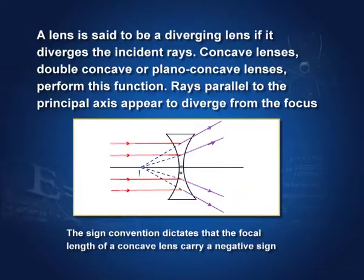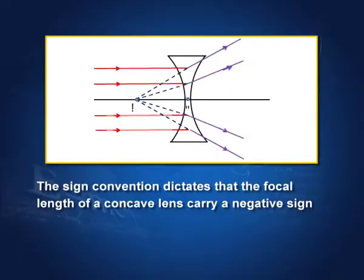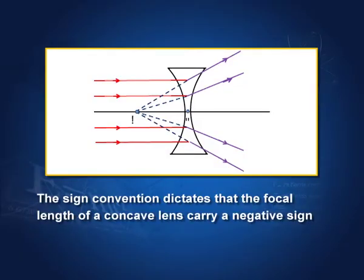Now let us take a concave lens — a double concave lens. Rays which come parallel to the axis diverge after passing through it. That is why a convex lens is known as a converging lens, and the concave lens is known as a diverging lens, because the rays diverge and appear to come from a point F. The distance O F is the focal length of the concave lens, and by our convention this O F is negative. So the focal length of a concave lens is negative.